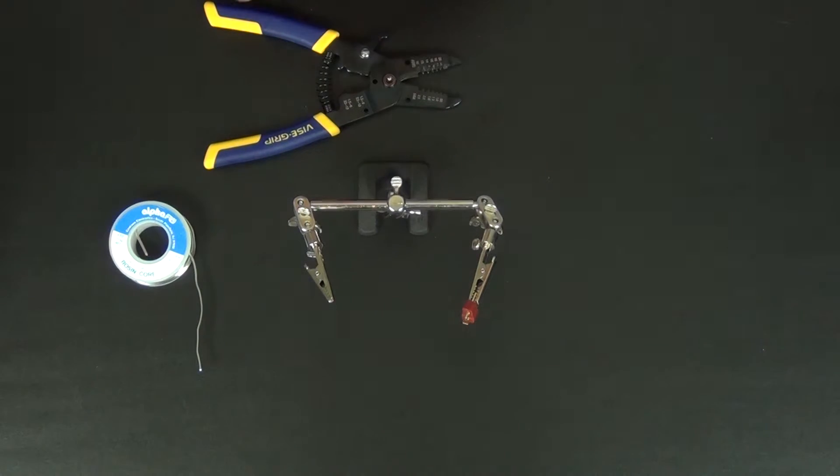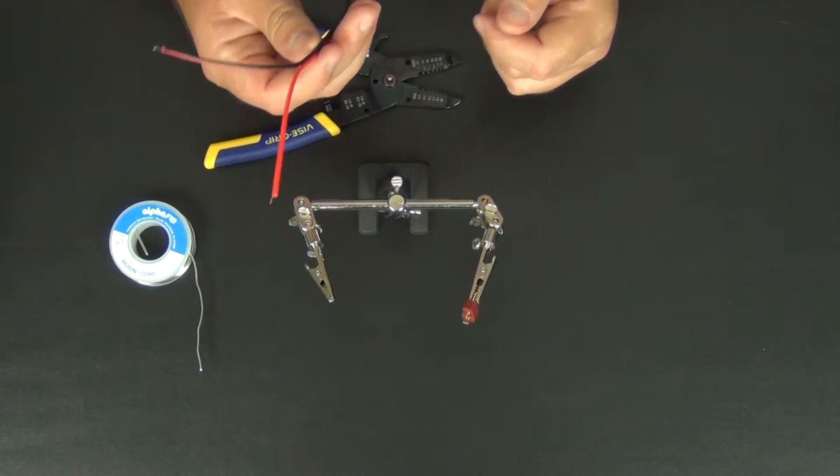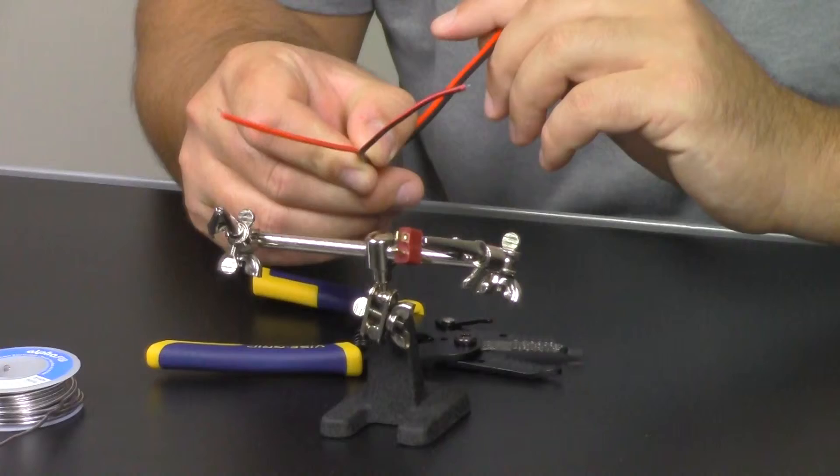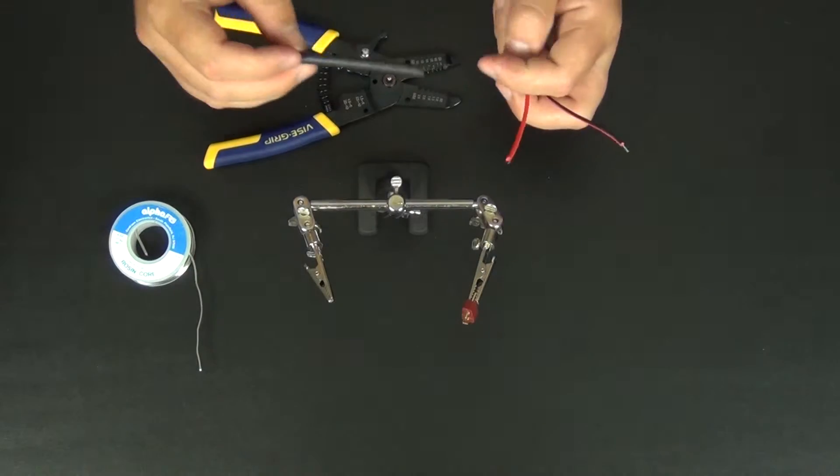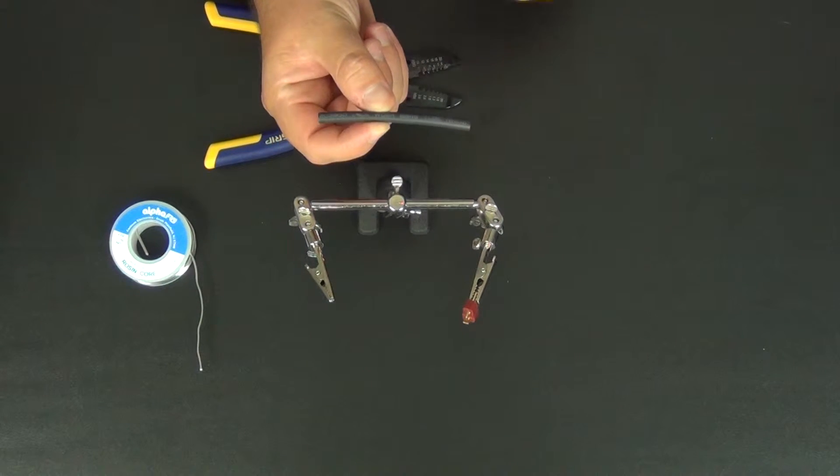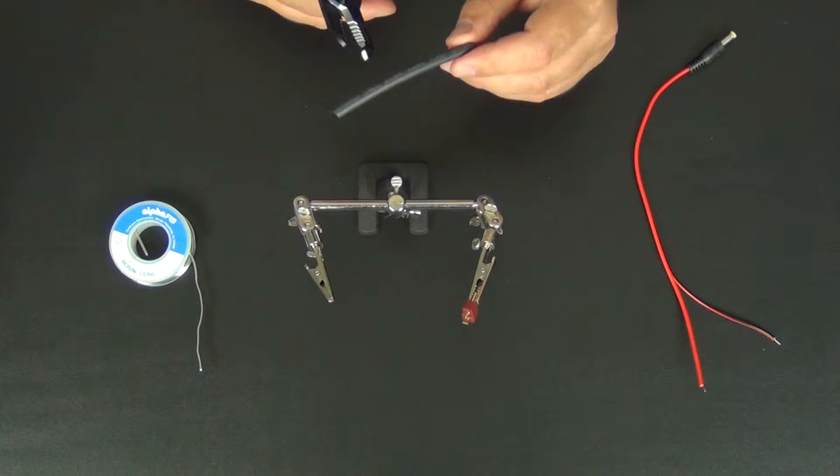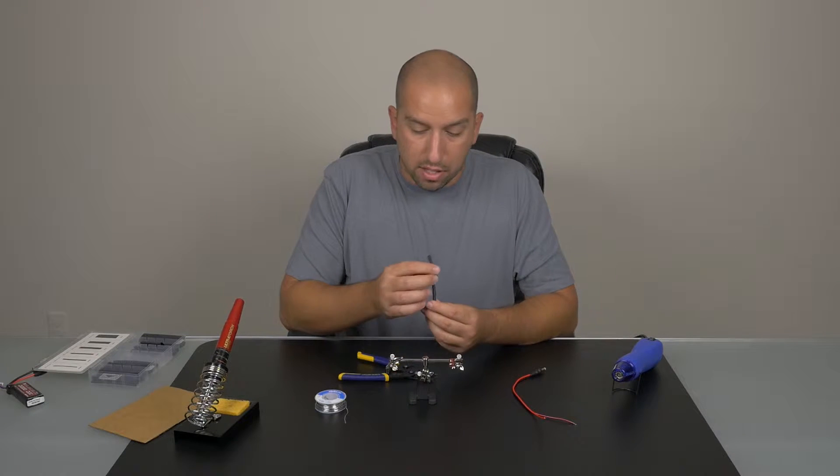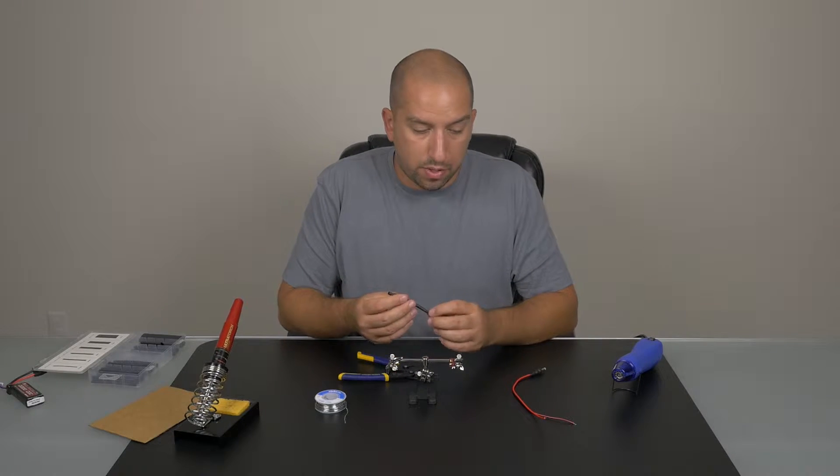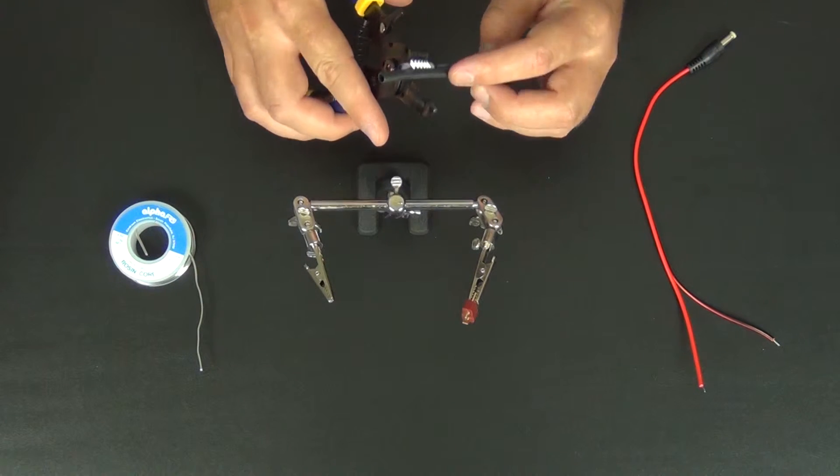Before we do any soldering we need to put some heat shrink wraps on our wires. We need to make sure that we put them on before we solder. Today we'll be using a 3/16 inch diameter marine grade heat shrink. This heat shrink has a nice little glue inside, and you'll see when we shrink it on that it does really nicely. So let's cut a piece.